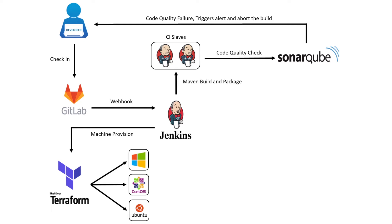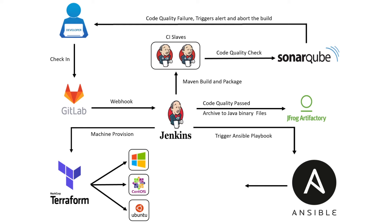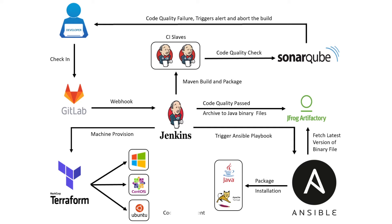Once the code meets the quality standards, the archived Java application package will be pushed to the JFrog Artifactory repository. In the final stage, Jenkins will execute the Ansible playbook on all the servers, which will perform the following tasks: download and install Java, download, install and configure Tomcat, pull the WAR file from JFrog, and deploy the WAR file in Tomcat. Finally, the Java application will be deployed on all three servers.